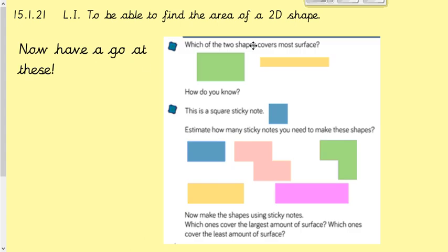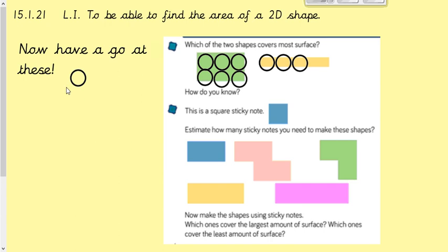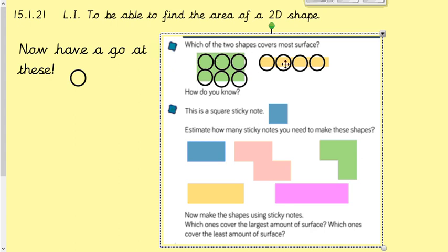Let's move on to some questions. Which two of these shapes covers the most surface? Let's see how many counters we can fit in. This shape we could probably fit in about six. This one — let's see — about five. And this one about four. Therefore this one covers the most surface — the surface area is bigger because we can fit more counters into it.